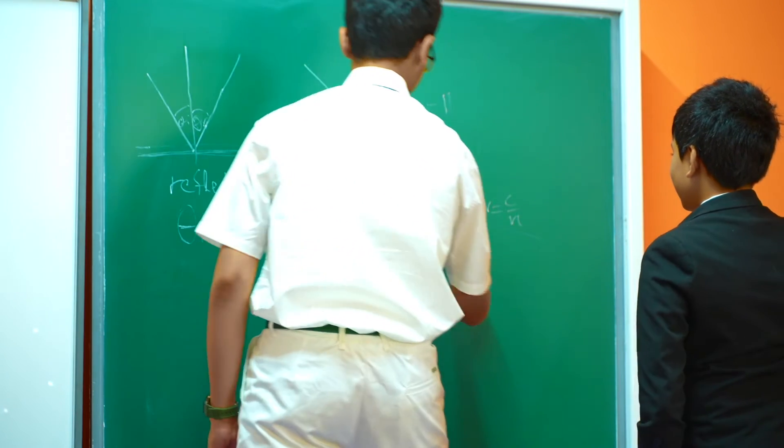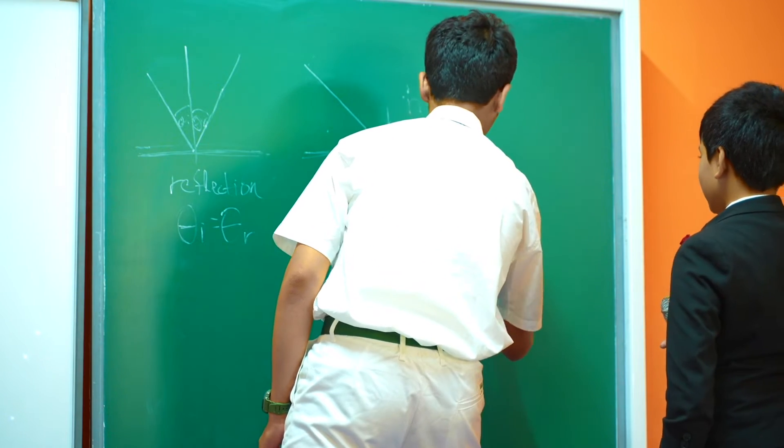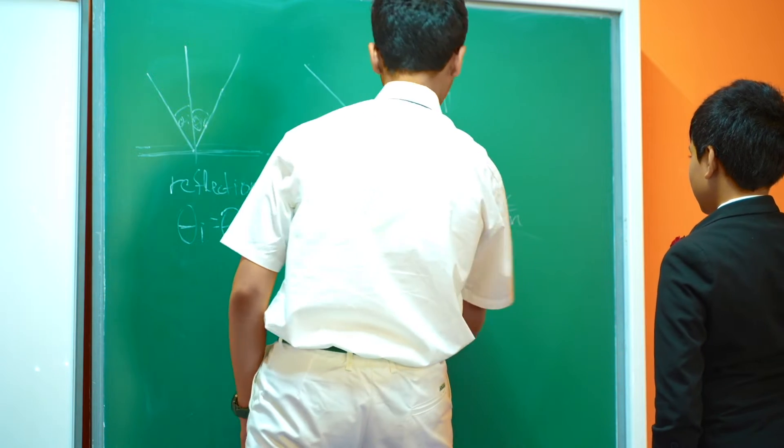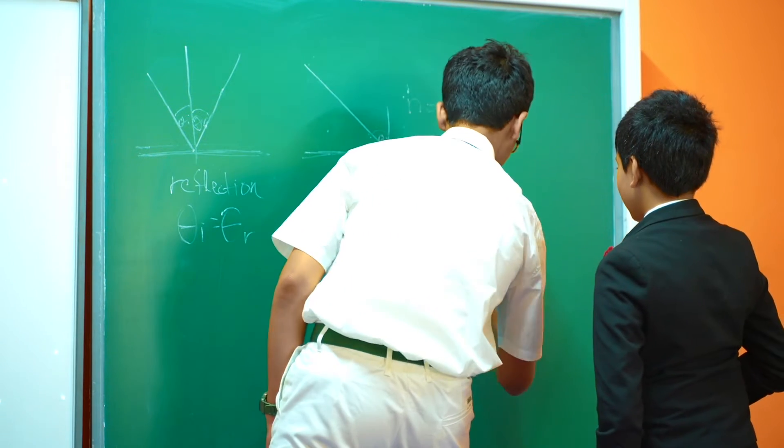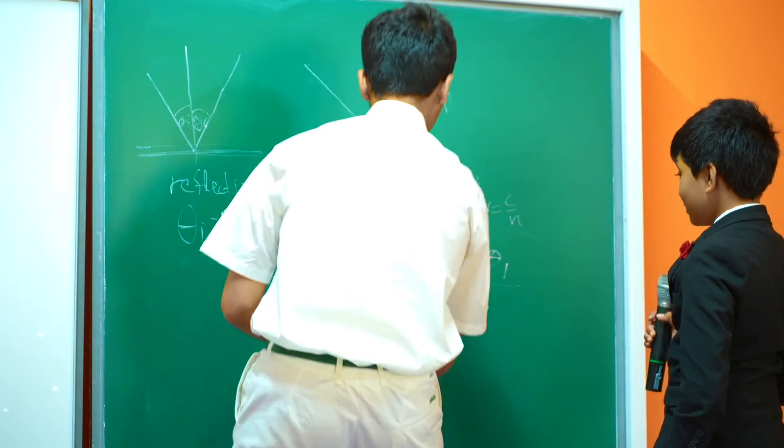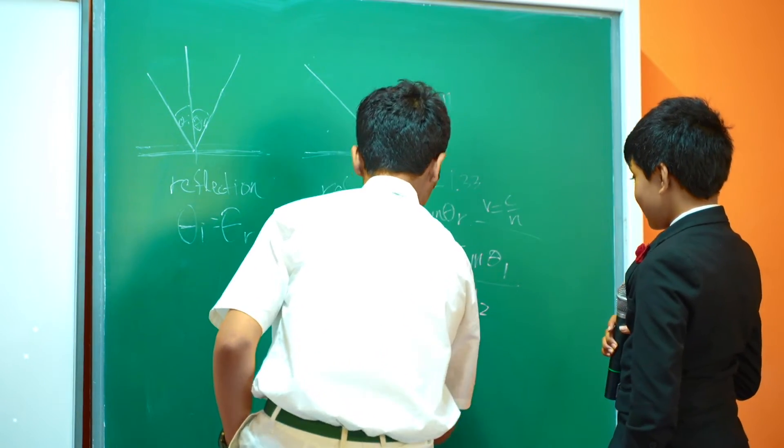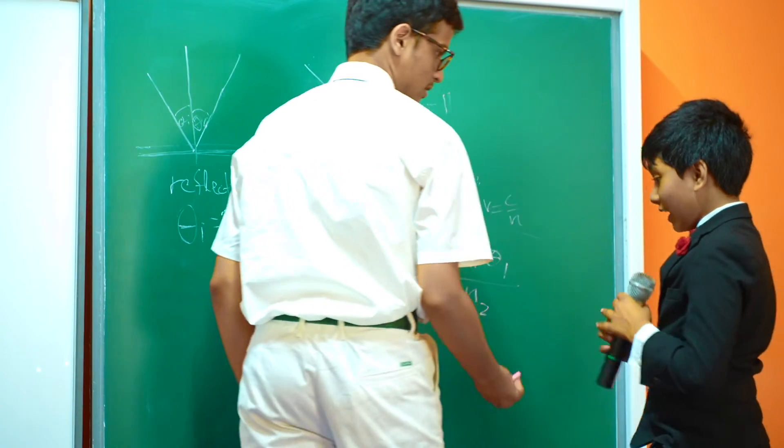Sine theta r is equal to sine theta i. Yeah. And then n1 divided by n2, and then theta r would just be the sine inverse of this. Okay, that's correct.